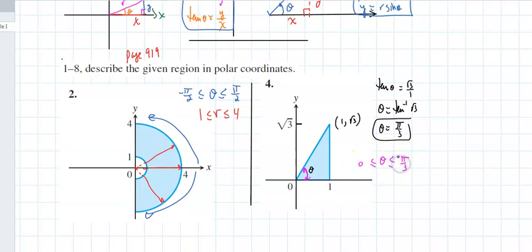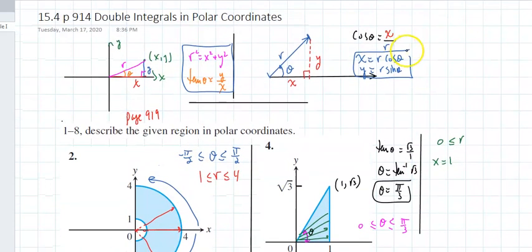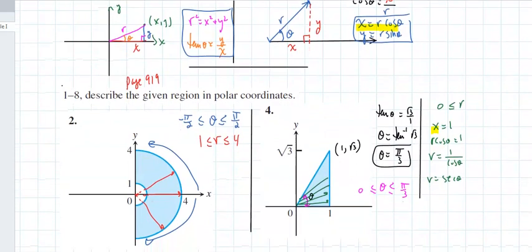I notice the angle is between 0 and pi over 3. Now looking at r, I'm trying to figure out what the limitations on r are. In this case, r is running between 0 and this line. I need to know what that line is - that's x equals 1. To go from x to r and theta, I know r cosine theta equals 1, which means r equals 1 divided by cosine of theta. So r equals secant of theta, meaning r is between 0 and secant of theta.